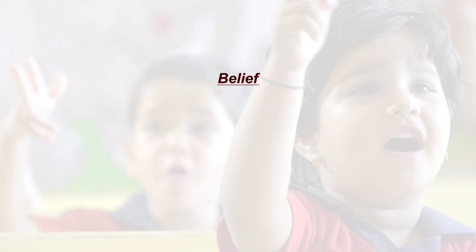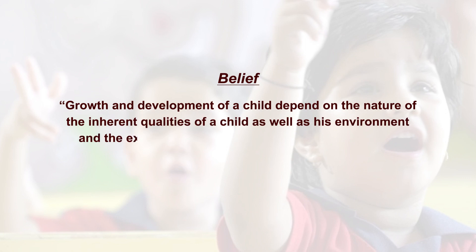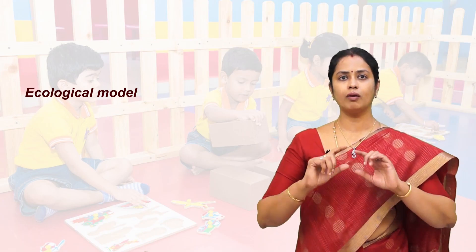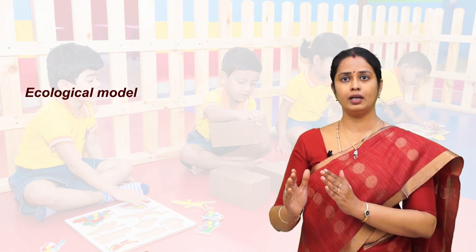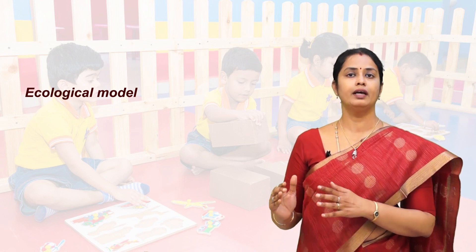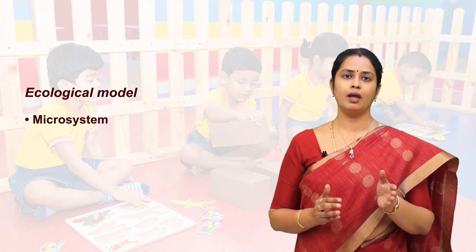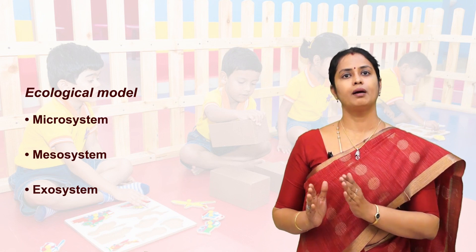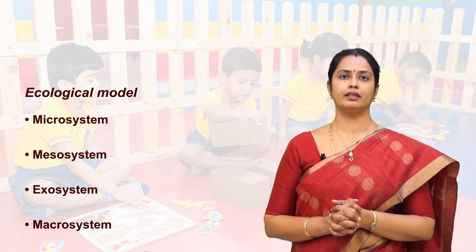With this, Bronfenbrenner proposed the ecological model with the belief that the growth and development of a child depend on the inherent qualities of the child as well as his environment, and the extent to which they interact with each other. Bronfenbrenner categorizes the whole environment of a child into four nested structures within which, and even beyond which, a child happens to spend his everyday life. These four structures are: microsystem, mesosystem, exosystem, and macrosystem.